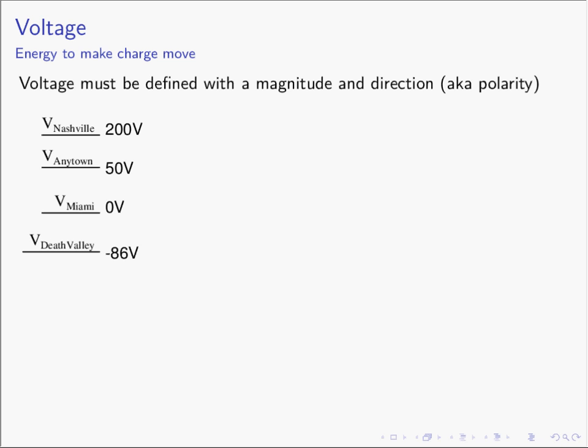So if we were going to talk about what is the voltage of Nashville — we could equivalently say that the voltage of Nashville is 200 volts higher than Miami. Because Miami is the same voltage as the reference, and Nashville is 200 higher than the reference, the voltage of Nashville is 200 volts with respect to Miami. We could also ask: what is the voltage of Nashville with respect to Death Valley? We see there is a 286-volt difference, so Nashville is 286 volts higher than Death Valley.